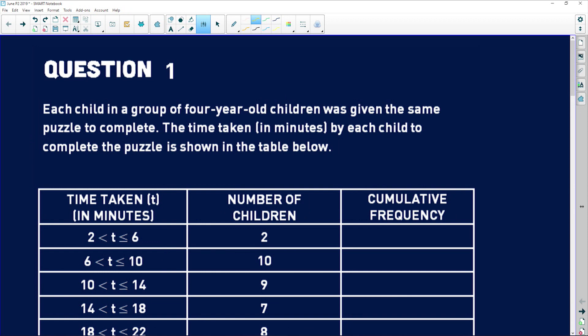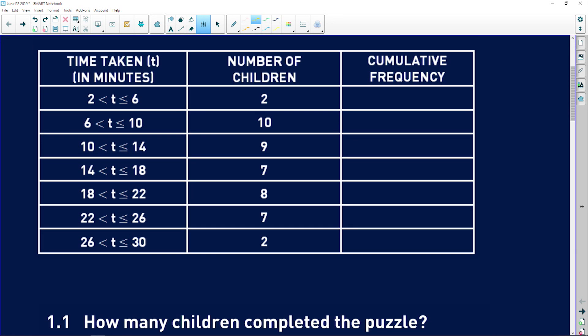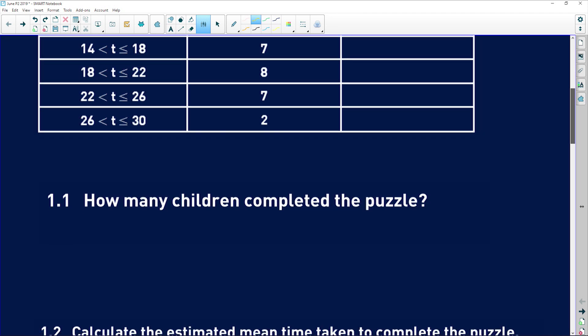Okay, let's take a look at Paper 2 from 2019, the June Paper 2. The first question, question one, is almost always statistics, so let's jump right into it. It says that each child in a group of four-year-old children was given the same puzzle to complete. The time taken in minutes by each child to complete the puzzle is shown in the table below. When you get something like this, these are intervals. Obviously it took this child more than two minutes but less than or equal to six minutes, and there are two children that took that interval of time to complete the puzzle.